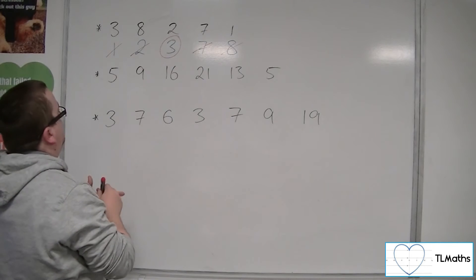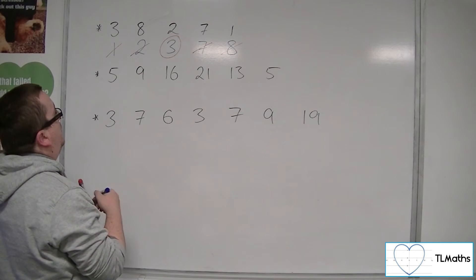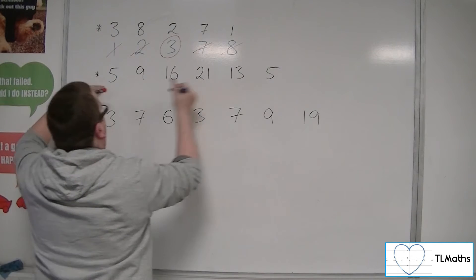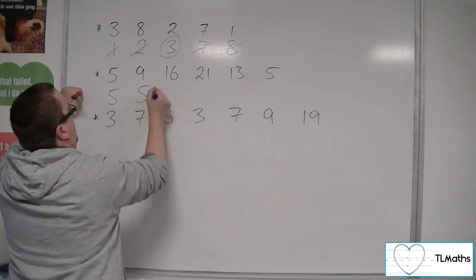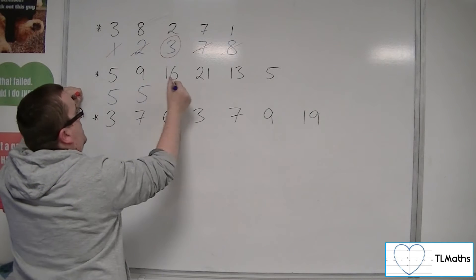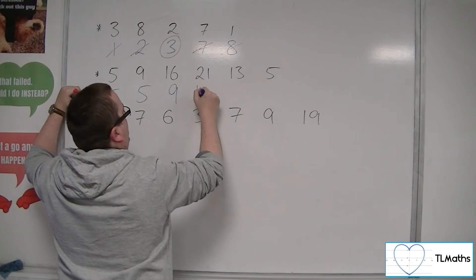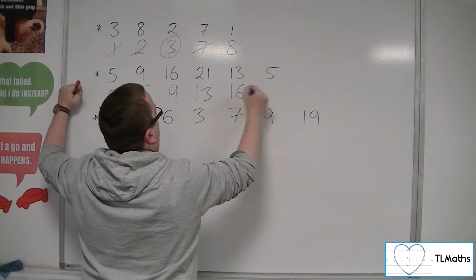For list number 2, first of all we've got to put these numbers in order. So we've got 5, then a 5, so 5, then 5. We've got 9, then we've got the 13, then the 16, then the 21.